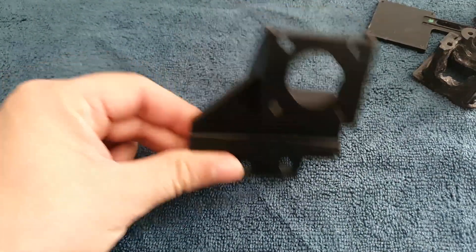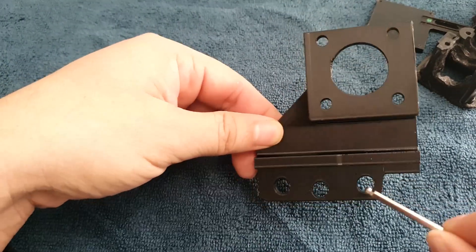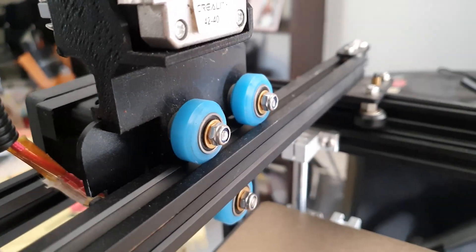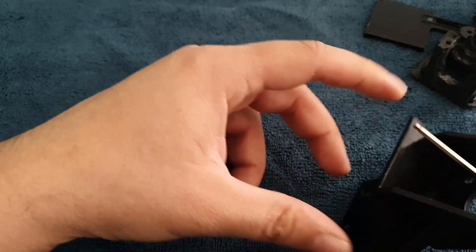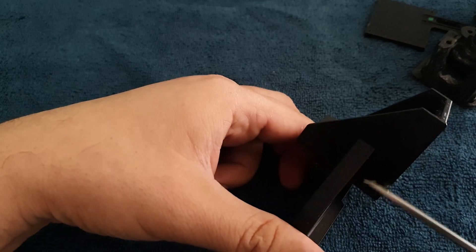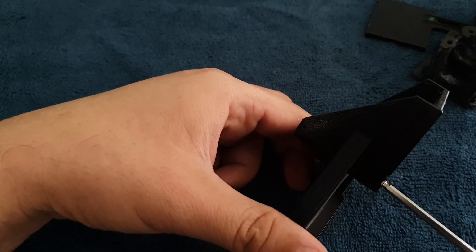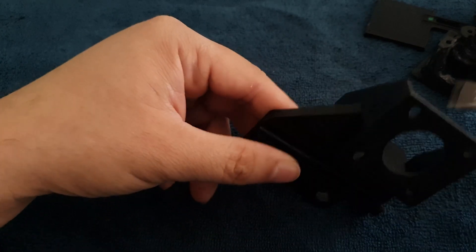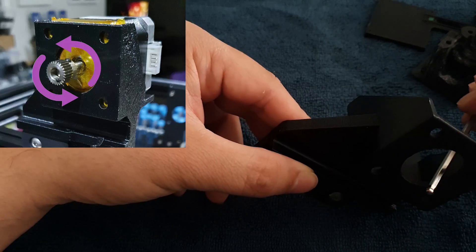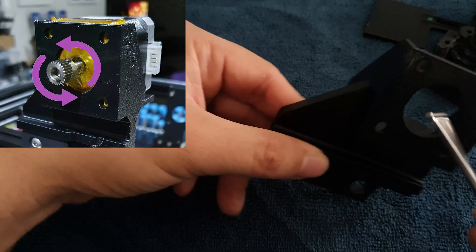Installing the extruder bracket is pretty easy - it's a matter of just using the existing hardware. If you're going to use the extruder this way, you're going to have to reverse the direction of the gear. The easy way I found to do that was to reverse the connectors.